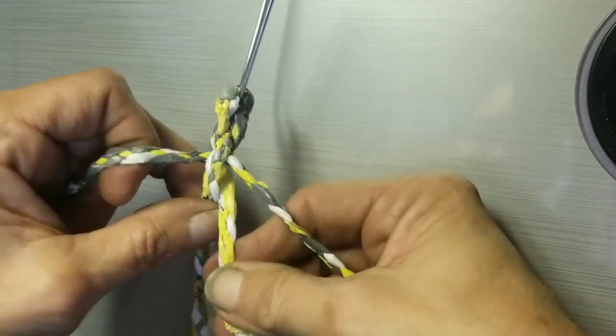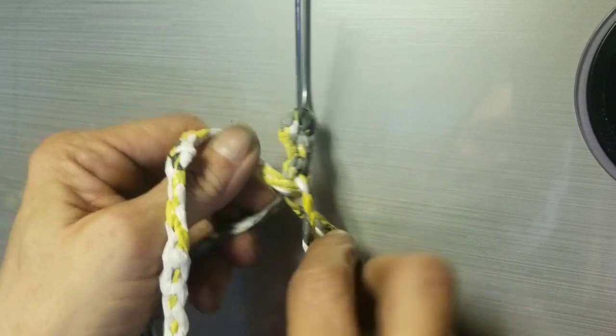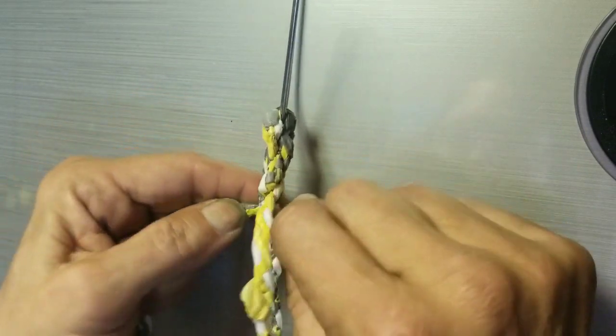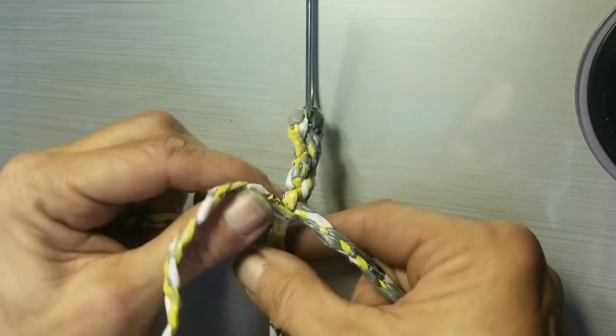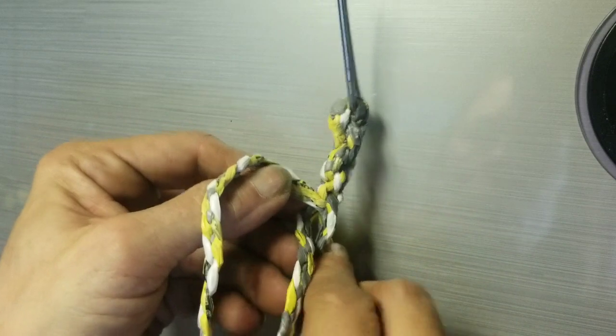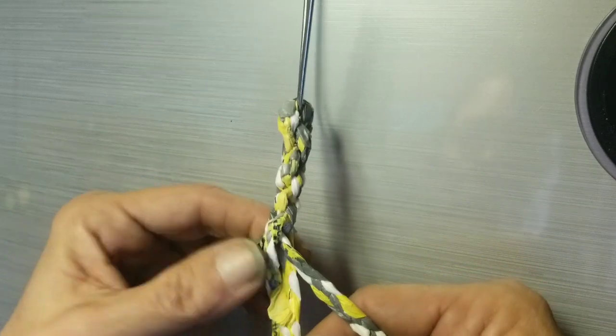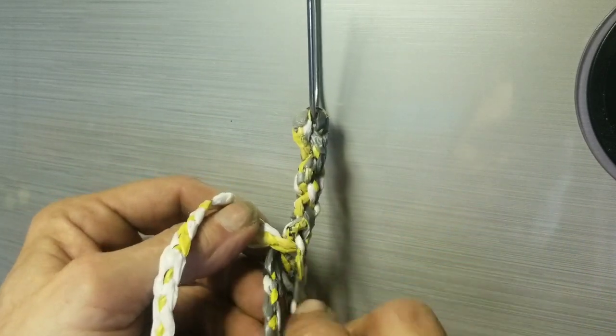Keep working like this. This actually goes together pretty quick. Just keep crossing it over underneath. Now there are more complicated ways to do a four strand round braid, but for making a simple rope out of your plastic bags...